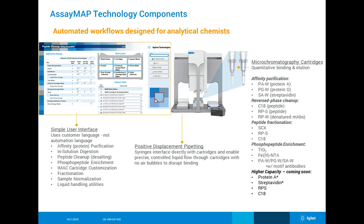The AssayMap Bravo head is built a little bit differently so that it can work with these microchromatography cartridges. It is a positive displacement pipettor with 96 syringes all at once. They work directly with the cartridges and enable precise, controlled liquid flow through the cartridges so you don't have any air bubbles or any disruption of the binding — you can control the flow rate. Think of the head and syringes like the pump and the cartridges like your column, which is why we consider this microchromatography technology.